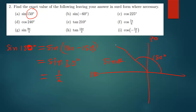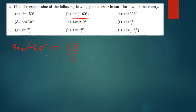The next one is sine(−60°). We know sine 60° = √3/2 from the table. But there is a negative outside the angle. For sine, if you have a negative outside the angle, it means sine(−θ) = −sine(θ). So the answer is −√3/2.